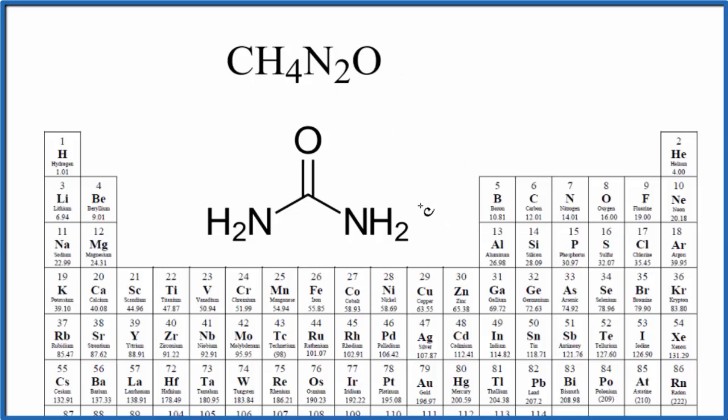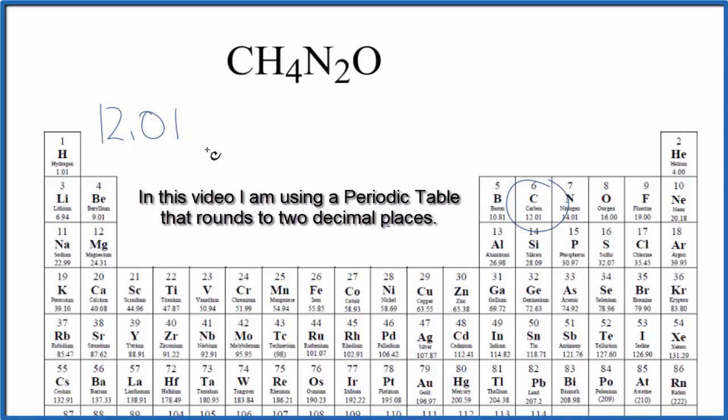So to find the molar mass, we find carbon which is 12.01 grams per mole. I won't write grams per mole each time. Let's write that at the end. We only have one carbon atom.